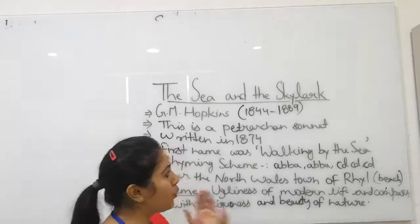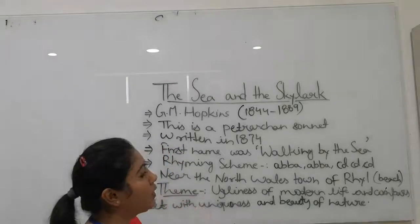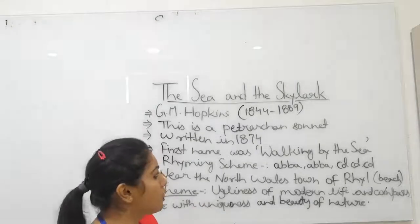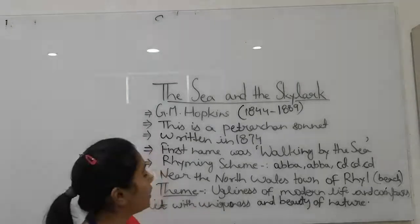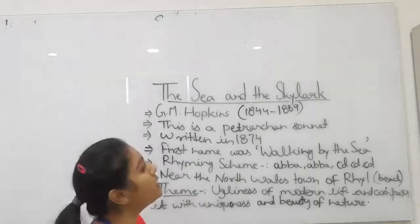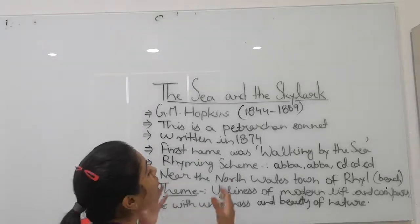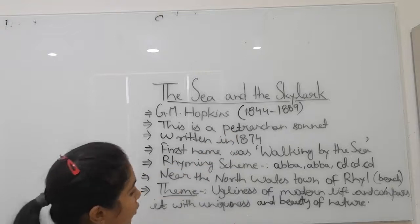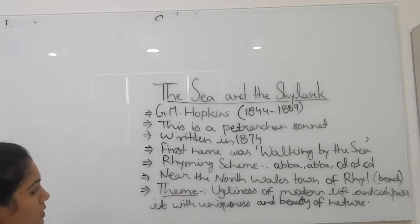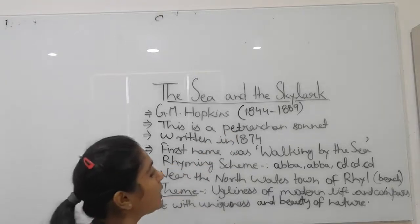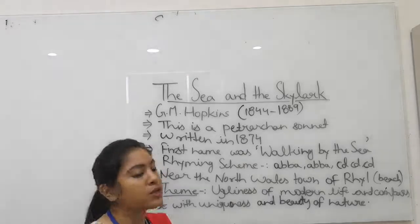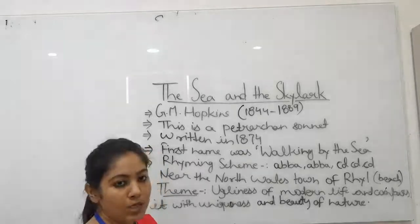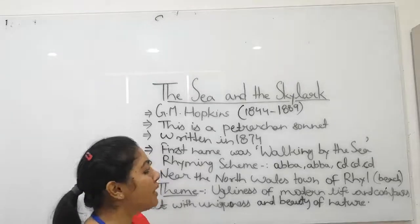Aaj ka video is poem ke introduction ka tha. Jo hamare poet hai — G.M. Hopkins — woh great Victorian poet hai. Unki poem hai 'The Sea and the Skylark' — sea matlab samundra, skylark is a bird. G.M. Hopkins ka lifespan is 1844 to 1889. Ye ek Petrarchan sonnet hai. Sonnet jo hai, two types ke sonnet hote hai — Petrarchan sonnet, jise Miltonic ya Italian sonnet bhi bola jata hai.